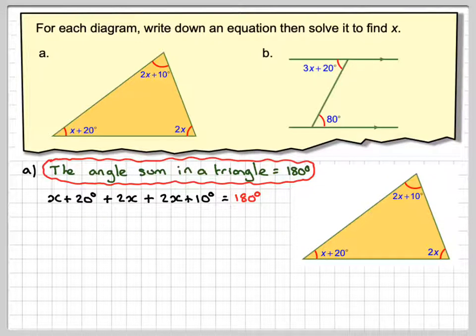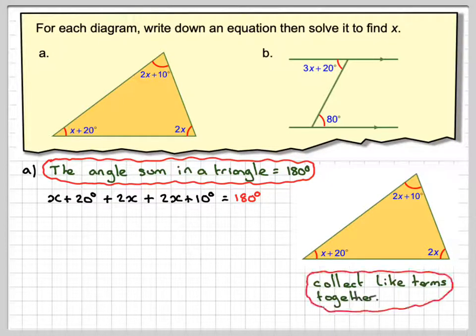We've now formed our equation, and we need to solve it. First step is to collect like terms. We have x plus 2x plus 2x, and then we have 20 plus 10, so we're grouping the like terms together, which equals 180.